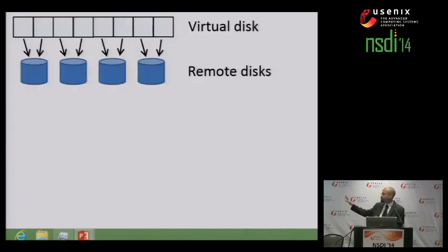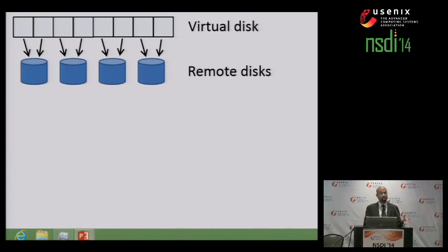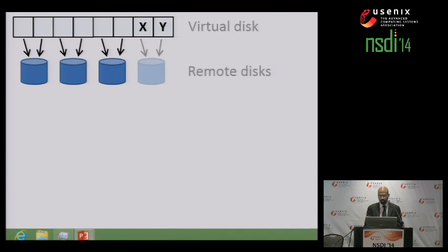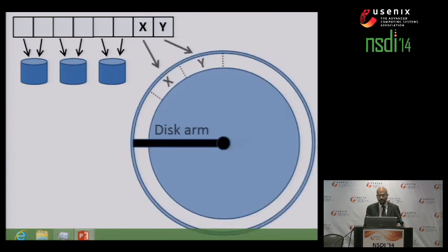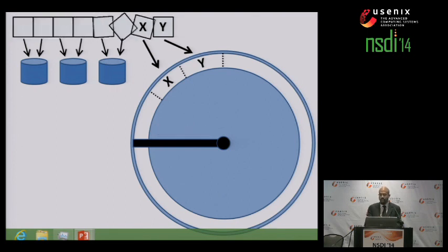The virtual disk represents a linear range of bytes. We're going to take that range, divide it into blocks, and stripe those blocks across the remote drives. Let's focus on the last two blocks in that range, which we'll call X and Y. If we look inside the remote disk, we'll see that X and Y are stored in adjacent locations within the same track. What happens if the client performs a sequential scan of that virtual disk range?